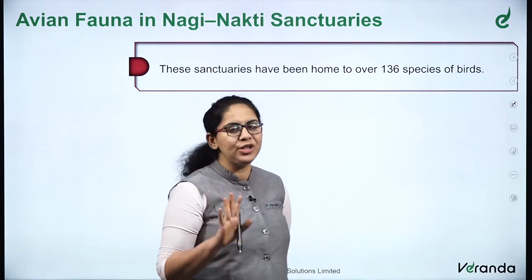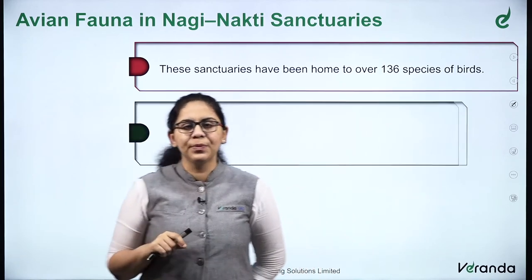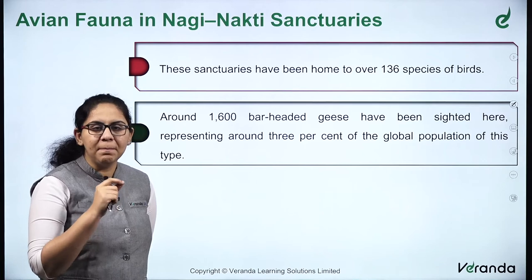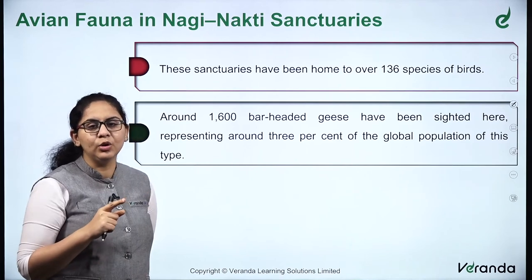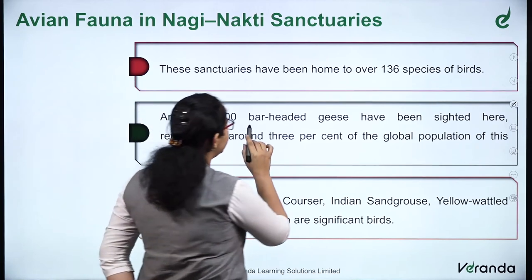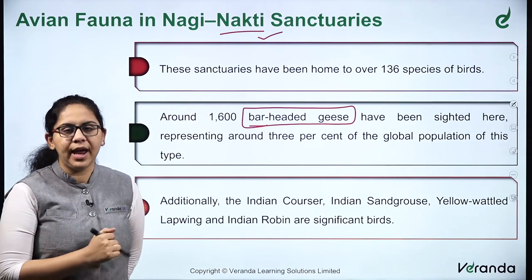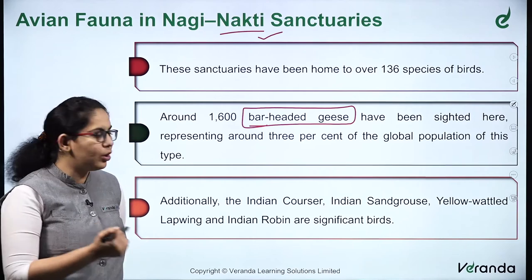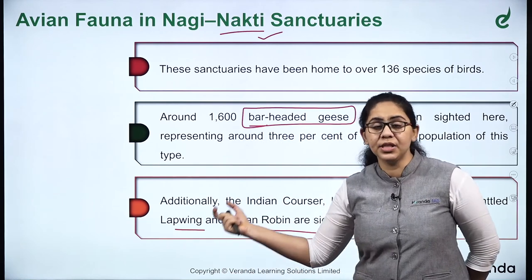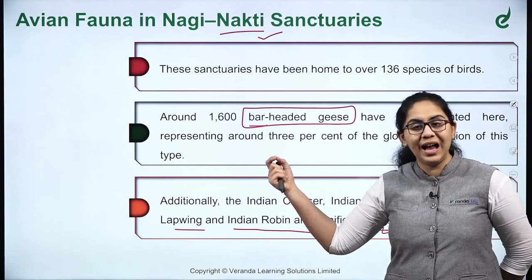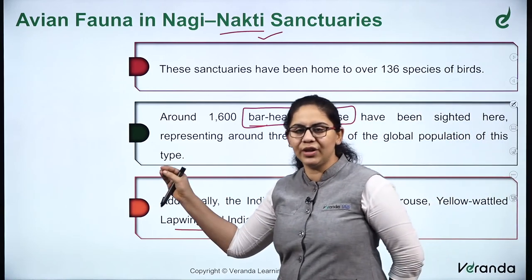Avian fauna in Nagi Nakti Sanctuaries — some factual information. These sanctuaries have been home to over 136 species of birds, and around 1,600 bar-headed geese have been sighted here, representing nearly 3% of the global population of this type. Additionally, the Indian Courser, Indian Skimmer, Yellow Wattled Lapwing, and Indian Robin are significant birds found here. If you see any of these names in newspapers, that bird's IUCN status becomes important for your examination.